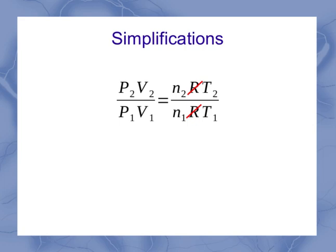Another common simplification is if we have a closed system. A closed system refers to one where no gas is allowed to escape or enter the system. That means necessarily that n1 and n2, the amount of gas, has to stay the same.